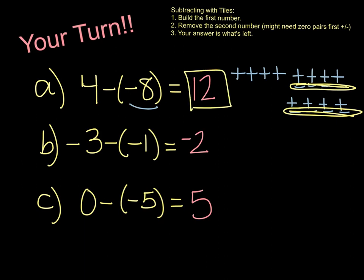For the next one, I have three negatives, and I'm removing just one negative. I don't need a 0 pair for that one, because I had what I needed to take away. And that's where my answer of negative 2 came from.